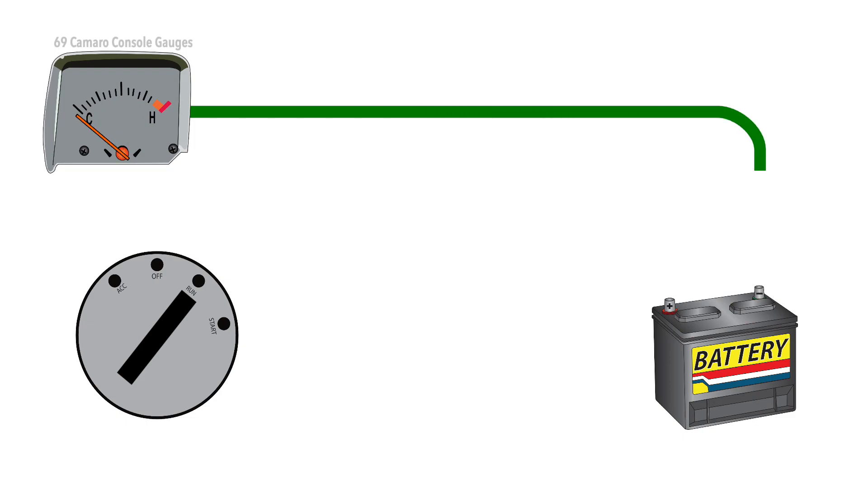Grounding the sending unit wire on this type of system should move the gauge to its maximum value, where no connection should show the lowest value. Manually touching this wire to ground should cause the needle to sweep from one side to the other on the gauge. This can be used to check for a break in the sending unit wire or faulty sending unit.